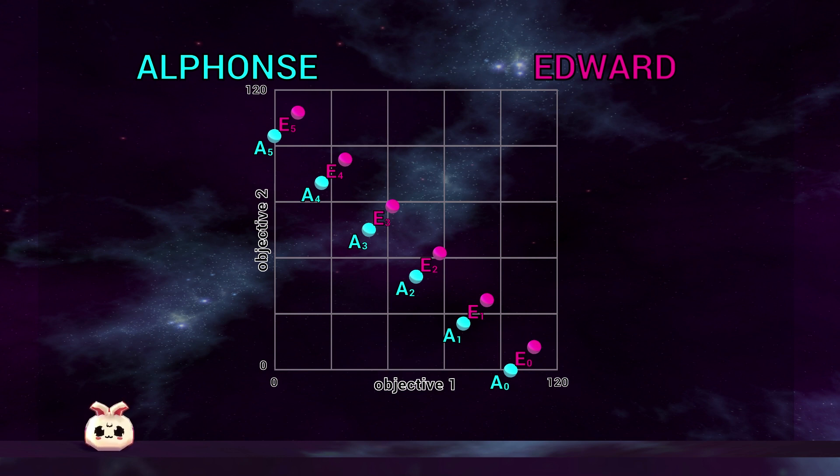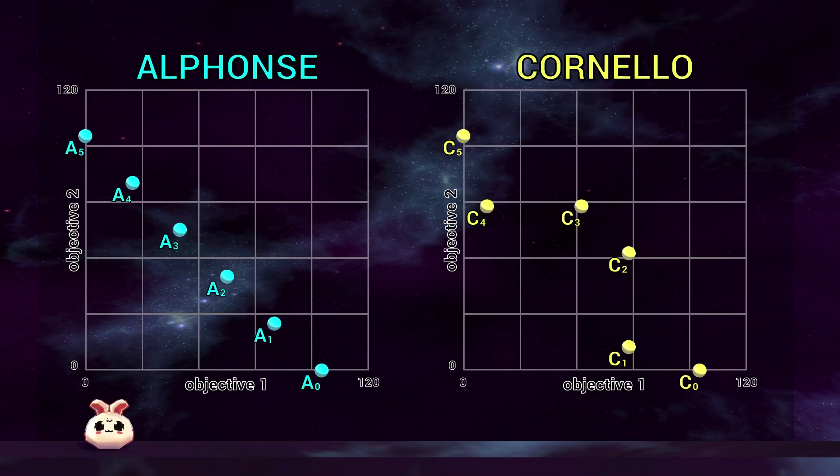This was simple enough, but let's have a look at an algorithm called Cornello. When comparing Cornello to Alphonse, it's difficult to tell which set of solutions is better. It certainly isn't as easy as it was when comparing to Edward. Let's have a closer look.